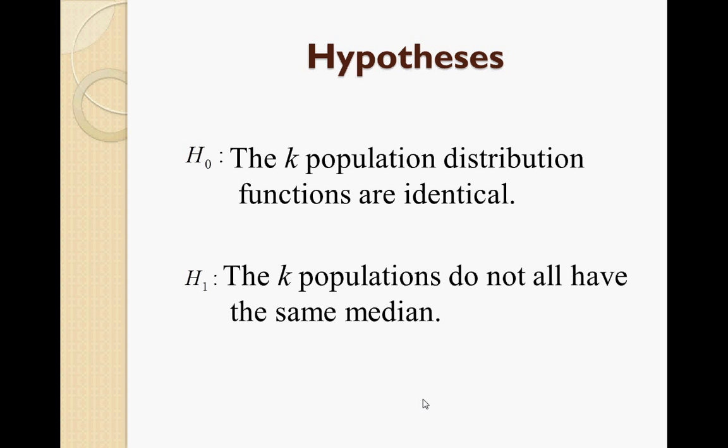The hypotheses for the Kruskal-Wallis test are: for H0, the k population distribution functions are identical, or we can write M1 = M2 = M3. For H1, the k populations do not all have the same medians, or at least one population has a median different from the others.